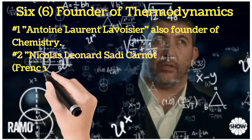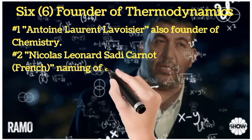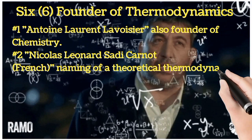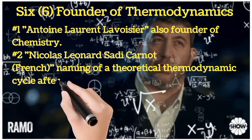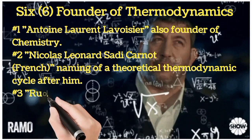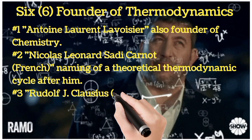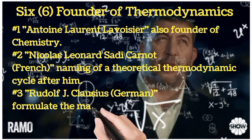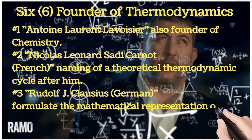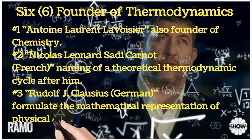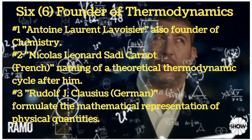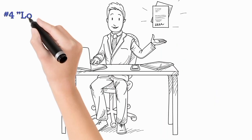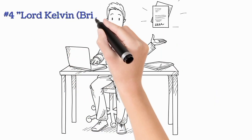Number three, Rudolf J. Clausius, a German, who formulated the mathematical representation of physical quantities. Number four, Lord Kelvin, a British, who developed the thermodynamic temperature scale, and an absolute temperature scale was named after him.